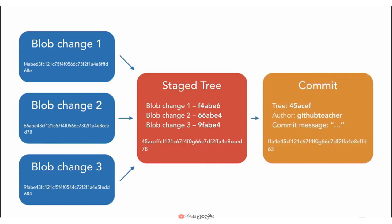When you finally commit these changes using the 'git commit' command, you are taking all of the changes that are in your staging area — this tree and all of the contents inside of it — and then committing them to your commit history.